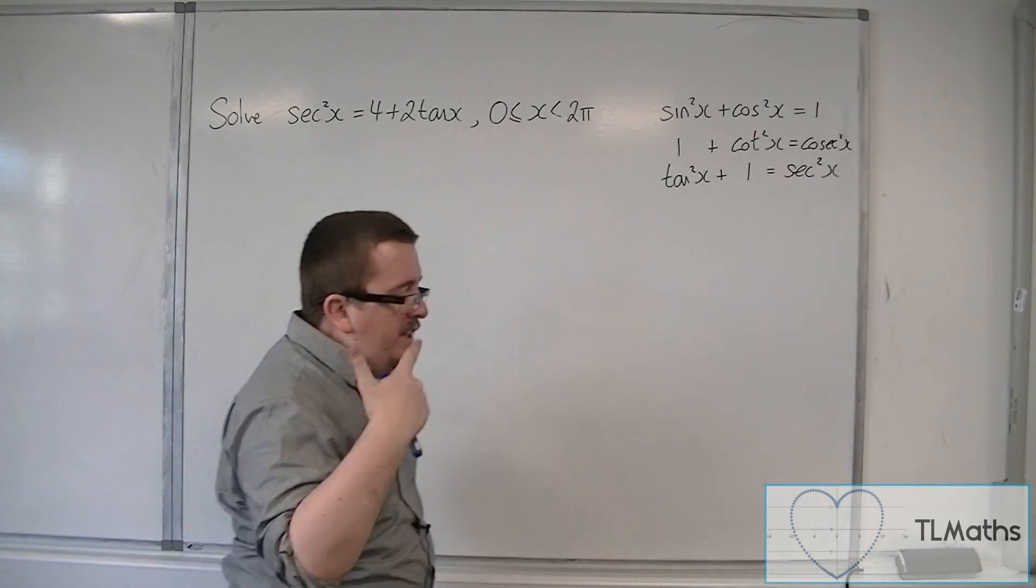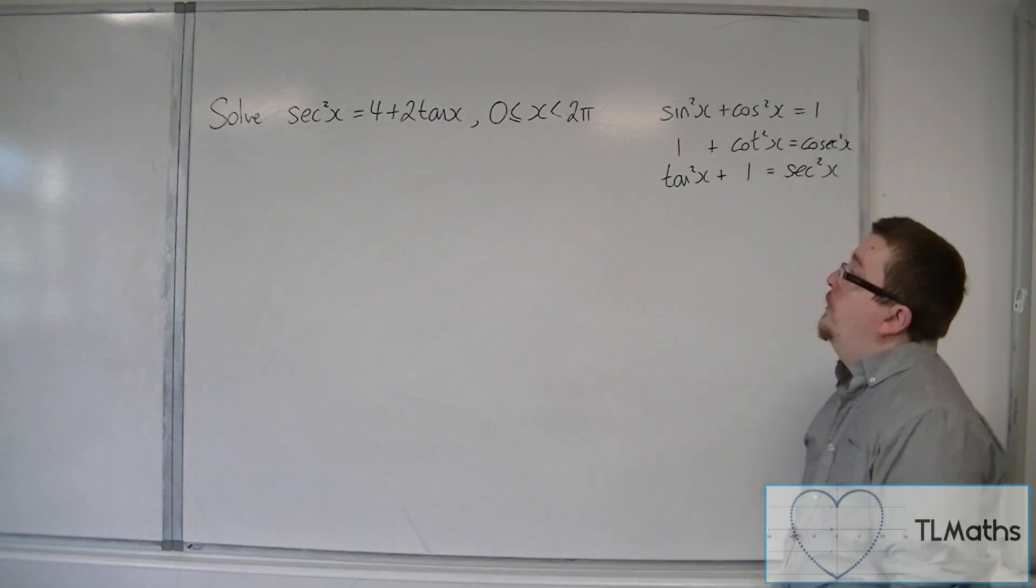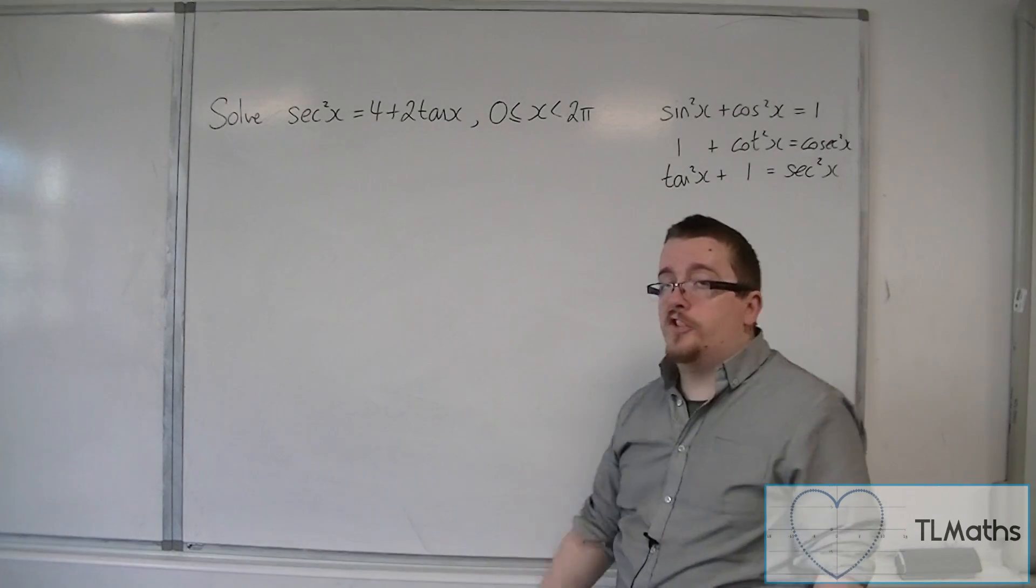And what we're going to do is we're going to use one of these in order to solve sec squared x is equal to 4 plus 2 tan x between 0 and 2 pi.